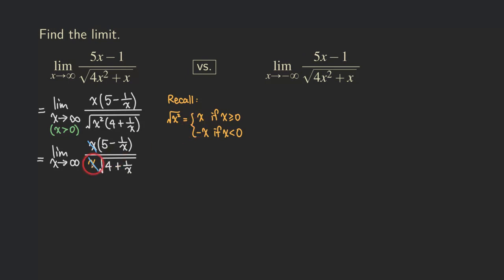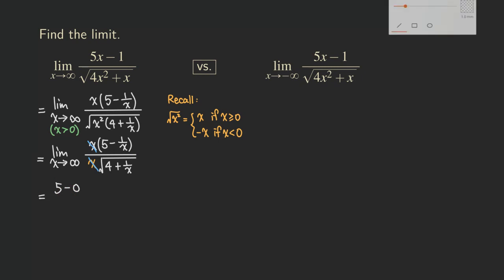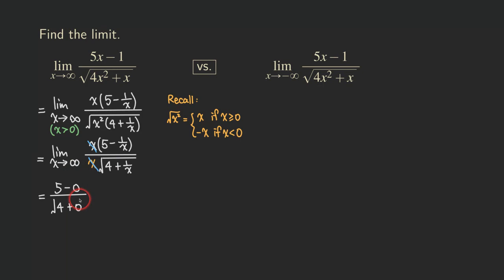Now, if x is approaching infinity, then what happens to 1 over x? It's going to be approaching zero — same thing for this 1 over x in the denominator. So our problem actually becomes 5 minus zero over the square root of 4 plus zero, because 1 over x is approaching zero when x is approaching infinity. So now it becomes really obvious what the answer is: the answer is just 5 over 2.